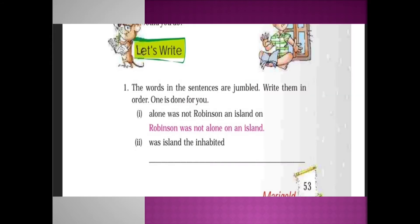Next, let's write the words in order — the sentences are jumbled. Write them in order; one is done for you. See the first one: 'alone was not Robinson an island on' — you have to arrange those jumbled words to get a meaningful sentence. The answer is: Robinson was not alone on an island. Next one: 'was island the inhabited' — the correct answer is: The island was inhabited.